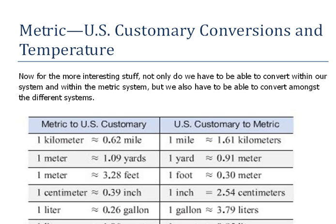Not only do we have to be able to convert within the metric system — milliliters to liters, grams to kilograms — and convert within our own system, feet to inches, pounds to ounces, but a lot of times we have to be able to convert between the two. For instance, if we're going 55 miles per hour, how many kilometers per hour is that? We have to be able to move back and forth.